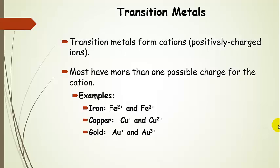Iron, which is Fe, can form a 2 plus or a 3 plus cation. Copper, another metal we've heard of and are familiar with, forms plus 1 and plus 2. And gold, another metal we're familiar with, plus 1 and plus 3.